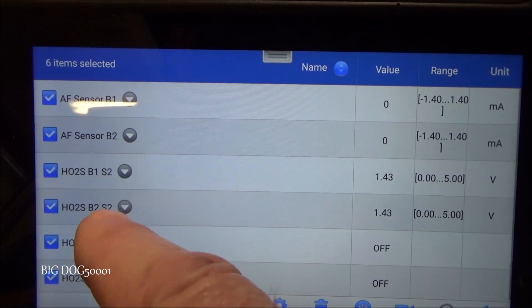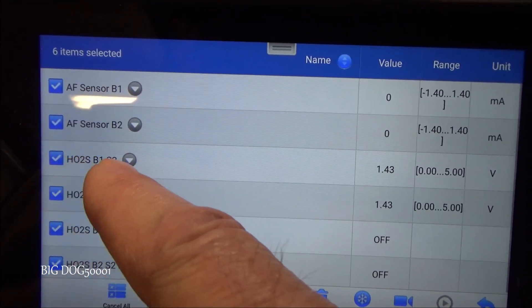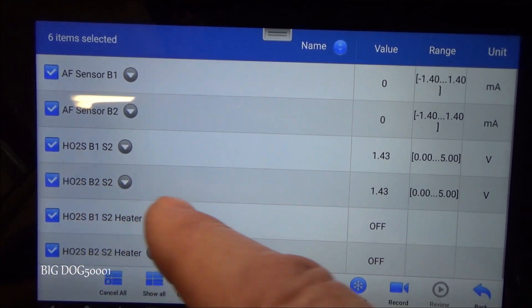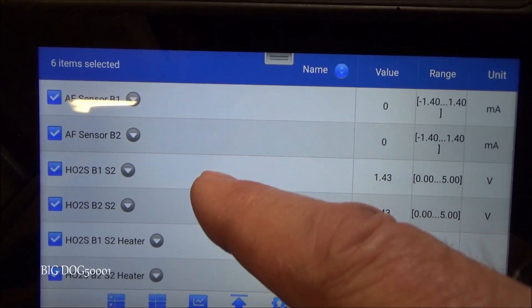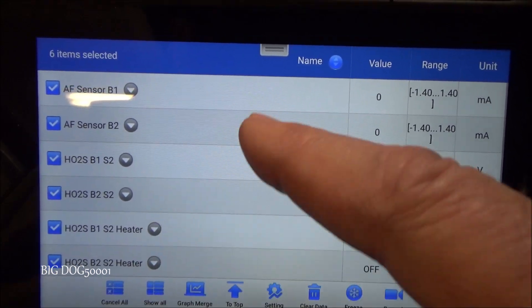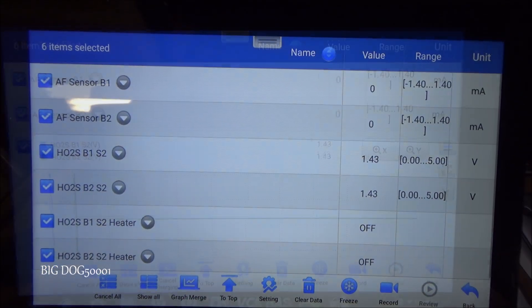The next two data pids are going to be our oxygen sensors downstream. So Bank 1 sensor 2, Bank 2 sensor 2. Right now they're sitting at 1.43 volts. So I want to graph those and I'll probably merge them. And we'll see how they react as the vehicle heats up.